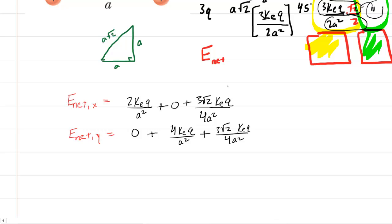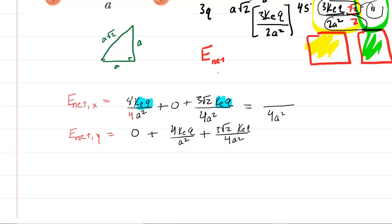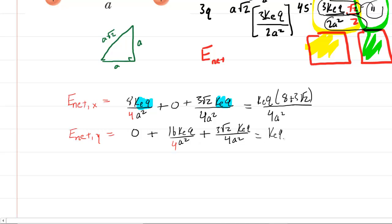Now we simplify. For the x component, find a common denominator by multiplying the first term's denominator by 4 and the numerator by 4, changing 2 to 8. Adding over 4A², and factoring out kEQ gives: kEQ(8 + 3√2) / 4A². For the y component, similarly multiplying 4 by 4 gives 16, and factoring out kEQ gives: kEQ(16 + 3√2) / 4A².